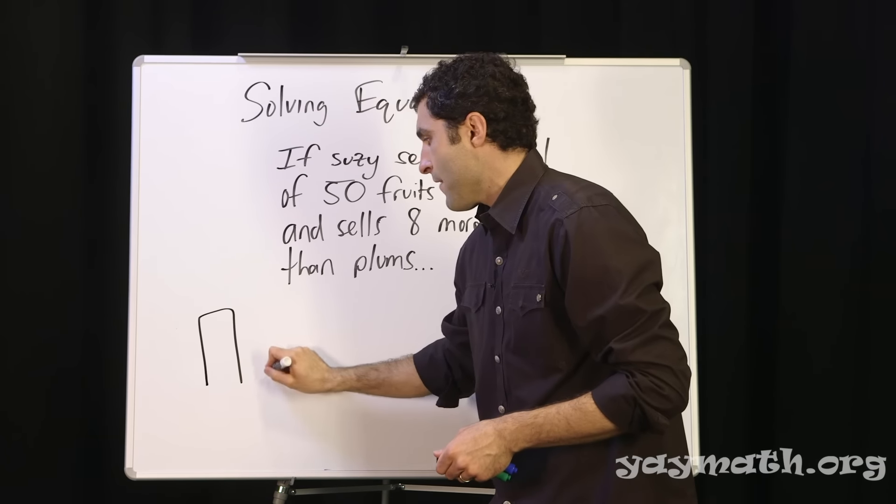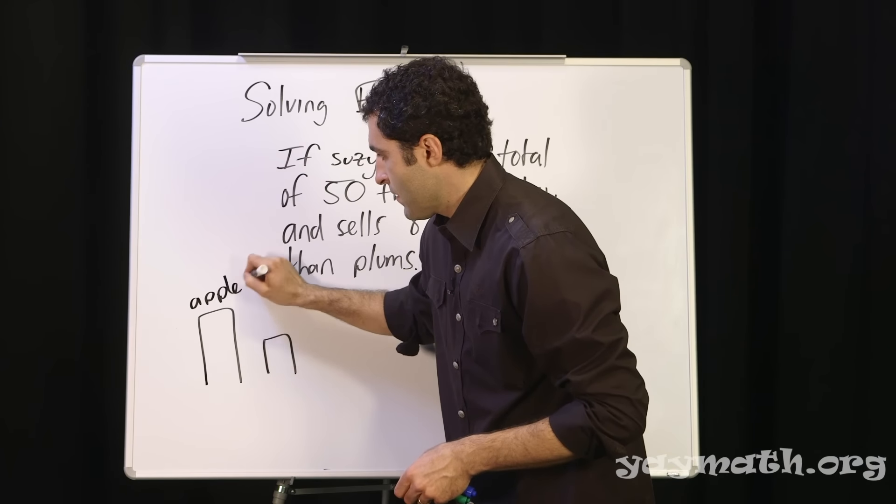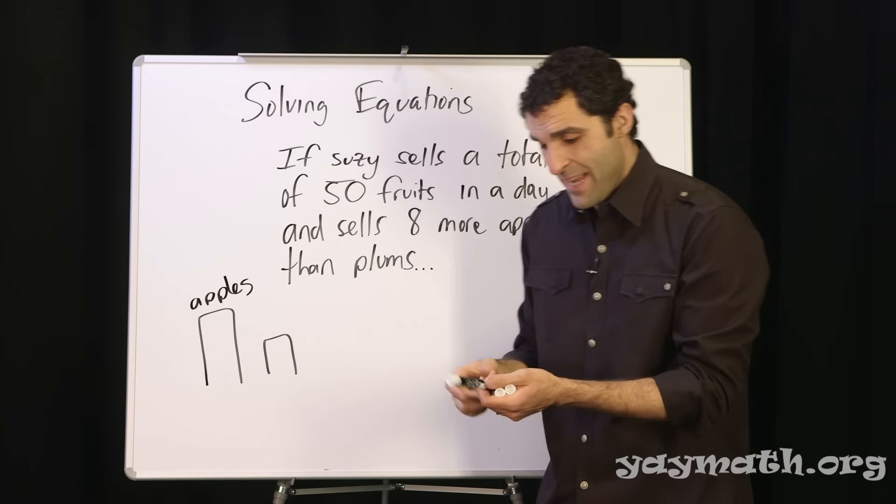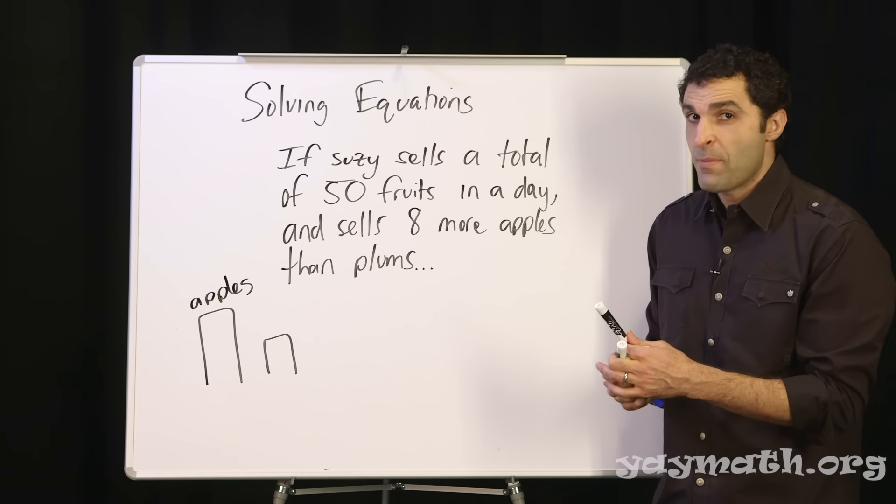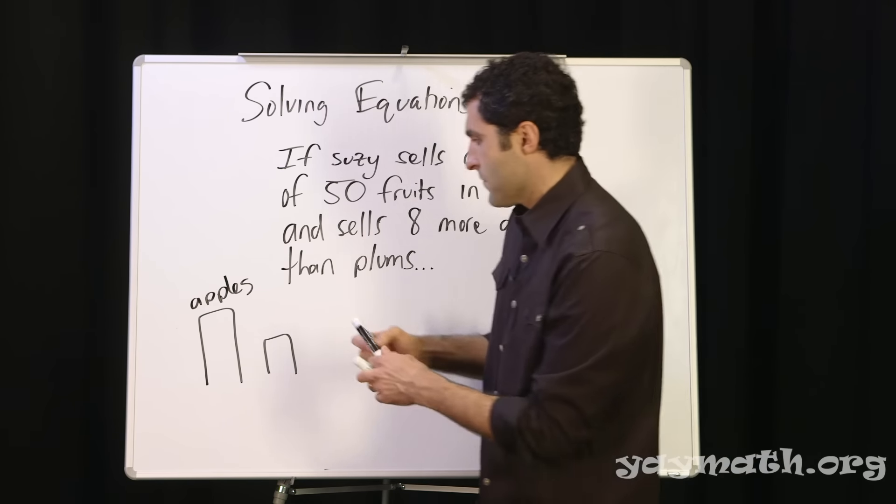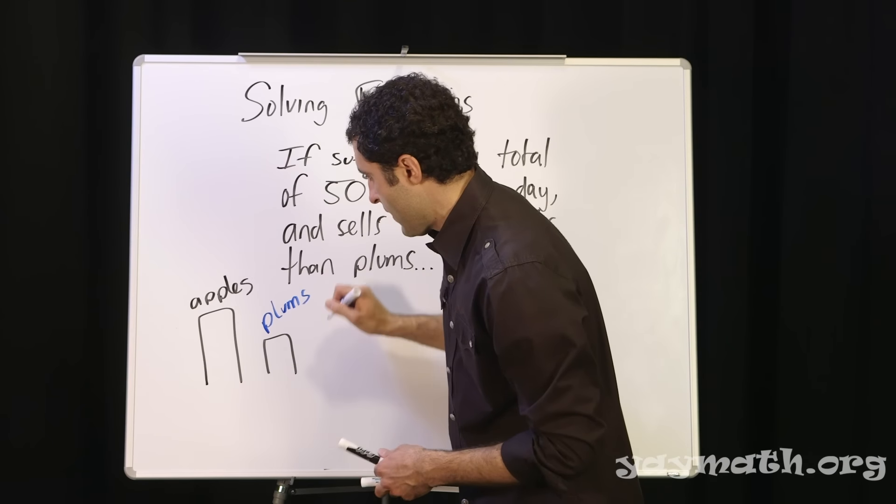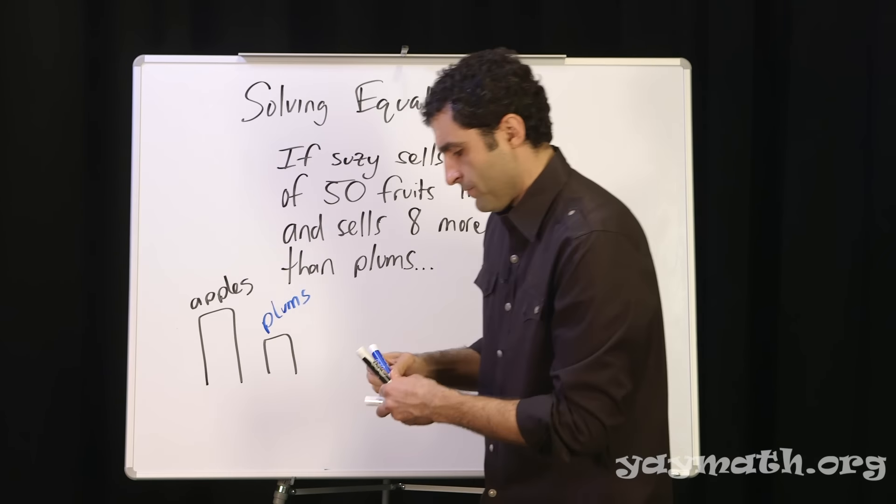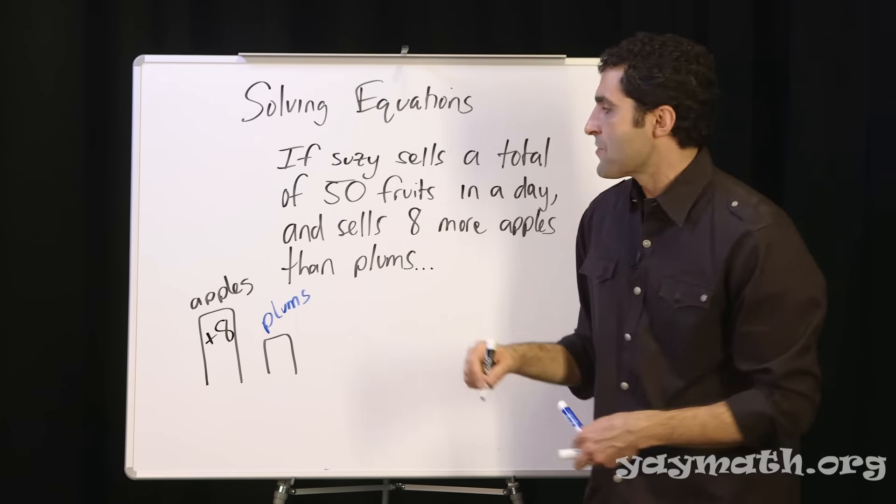You can even put a little bar graph. So these are your apples. I like to eat apples and bananas. I won't continue this song because it's repetitive. And these are your plums. Plums. And this is plus eight. Can we picture that? Eight more apples than plums.